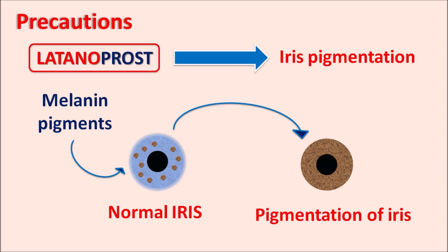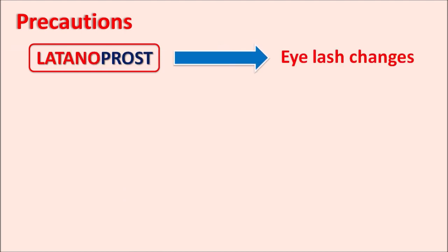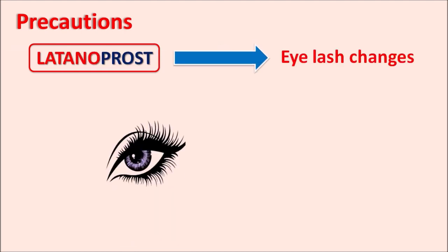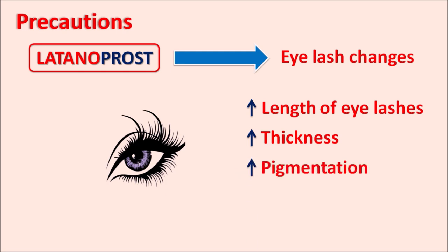Latanoprost can also produce eyelash changes. After use of latanoprost, the length and thickness of eyelashes may increase. The drug can also increase melanin pigmentation of the eyelids, and uneven growth of eyelashes can be observed. Fortunately, this side effect is also reversible — whenever the drug is stopped, these effects can be minimized.